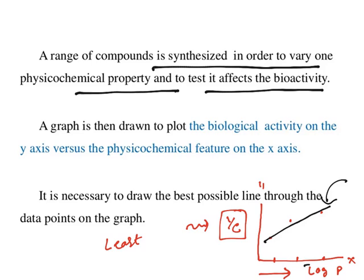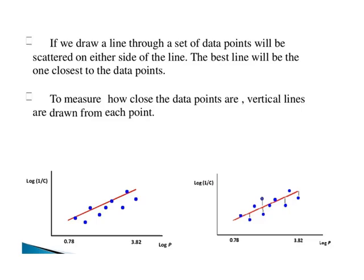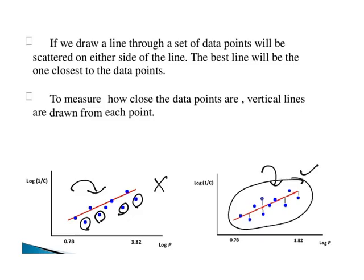There is a correlation: by increasing log P, activity is increasing. You can put it in an equation, and that equation serves as the QSAR equation. The line should be covering all the data points — a line that leaves all the data points is not a good fit, whereas one that covers all data points is a good fit.